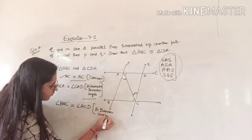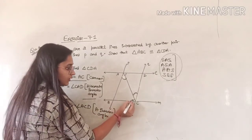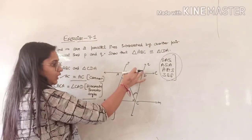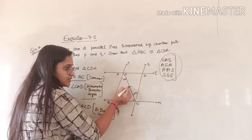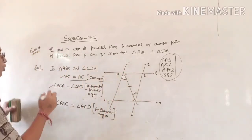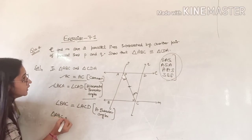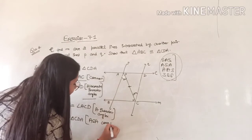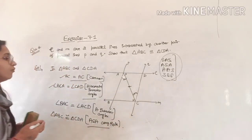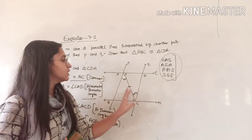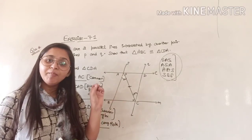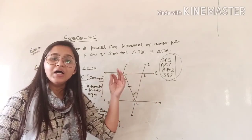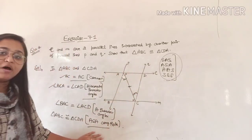Now we have angle, side, angle — this is the included side, so angle-side-angle. Therefore, triangle ABC is congruent to triangle CDA by the ASA congruency rule. The main thing to notice in geometry is that you have to analyze the given figure, derive the relations from it, and with the help of those relations, prove your results.